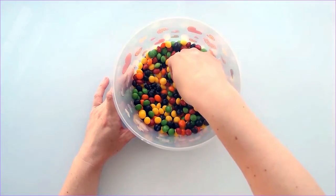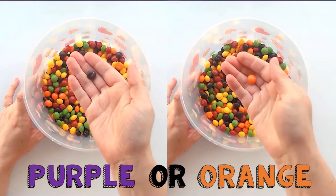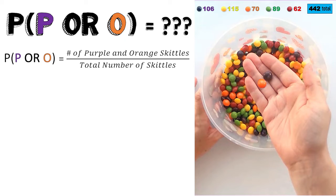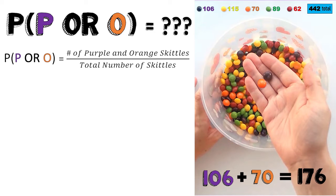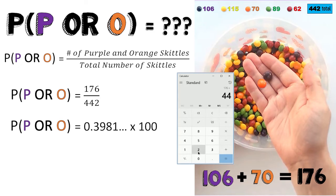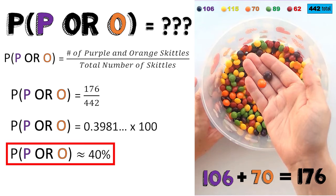For the last problem, we are going to look at the probability of randomly choosing a purple or an orange Skittle. We would need to take the number of purple Skittles along with the number of orange Skittles and divide by the total number of Skittles. 106 purple Skittles plus 70 orange Skittles is equal to 176. I will divide 176 by 442, then multiply the decimal by 100. This means that I have approximately a 40% chance of randomly choosing a purple or orange Skittle.